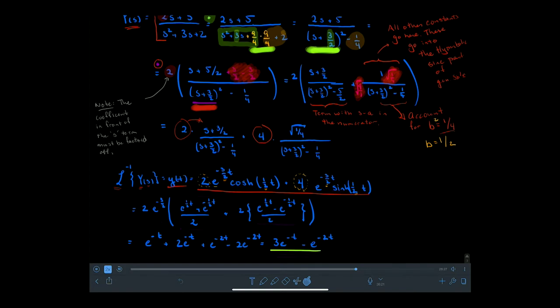Once those coefficients are known, we take the inverse Laplace transform of capital Y of S to get little y of t. We get 2 times e to the negative 3/2 t times hyperbolic cosine of (1/2)t, plus 4 times e to the negative 3/2 t times hyperbolic sine of (1/2)t. That's the solution in hyperbolic sines and cosines with exponential multipliers. To verify, we'd expand the hyperbolic functions using their exponential definitions and multiply in the exponentials out front to recover the same exponential solution as above.